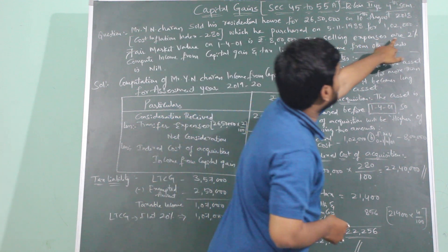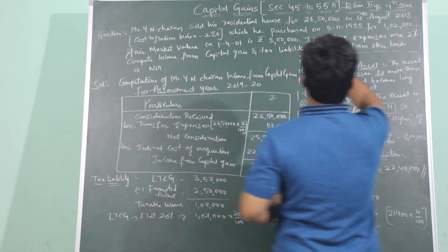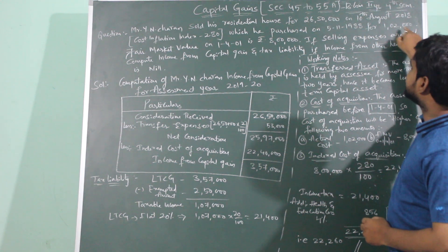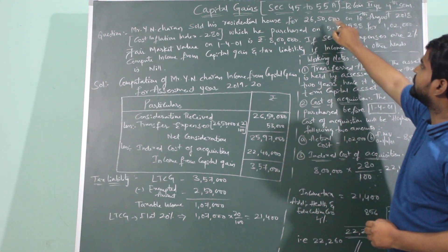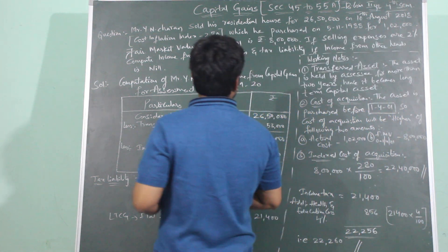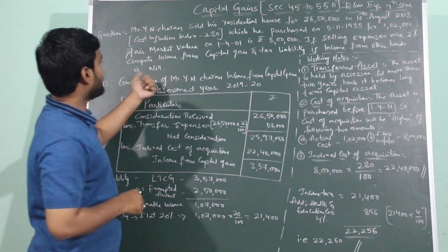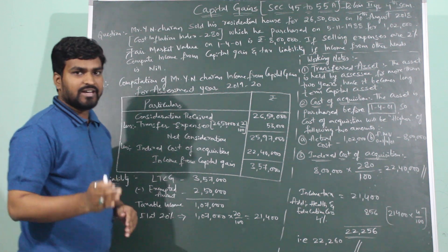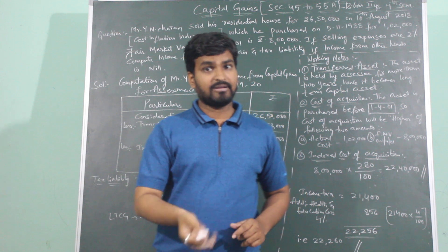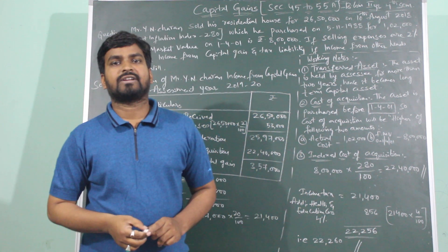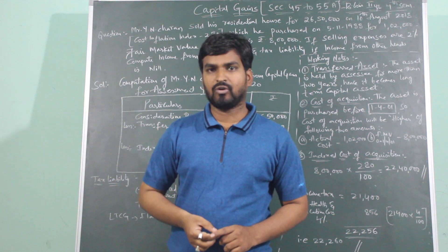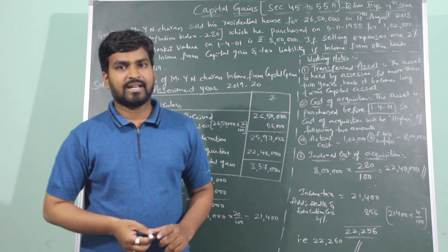Selling expenses are 2%, and selling expenses are always calculated on the sale amount which is 26,50,000. Compute income from capital gain and tax liability if income from other heads is nil. We need to find Mr. Y.N. Charan's income from capital gain and his tax liability, given that his income from other sources is zero — he has only capital gain income.